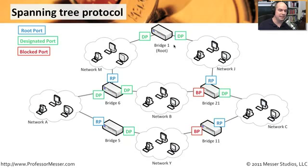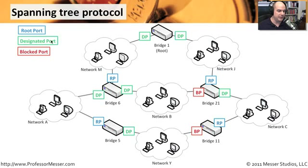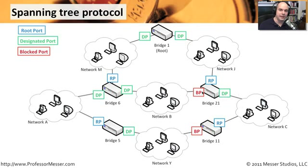Here's bridge 1 at the top — it is designated as the root bridge. It does not have a root port because it is the root; it doesn't need a link to the root. What it does have are designated ports, which are ports available to send traffic out over the network. This network is very much interconnected, and it would be very easy to have a loop appear if spanning tree wasn't in place. Every bridge knows of everyone else's. If it knows where the root bridge is, it creates a root port open to the root bridge, a designated port linking to the rest of the network, and a blocked port so that traffic will not go out of that connection.